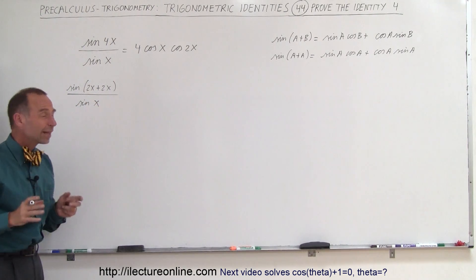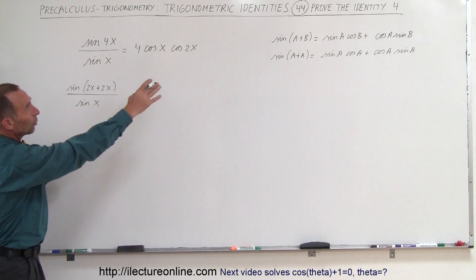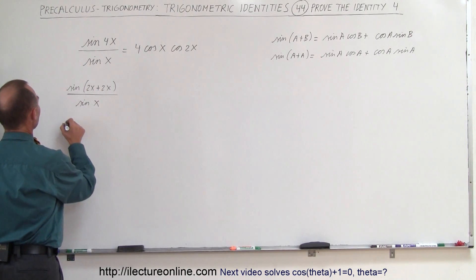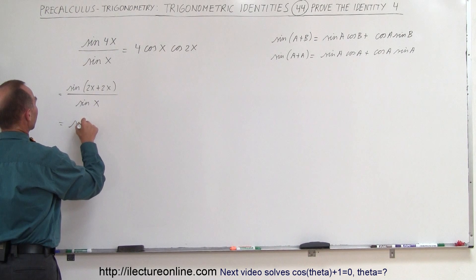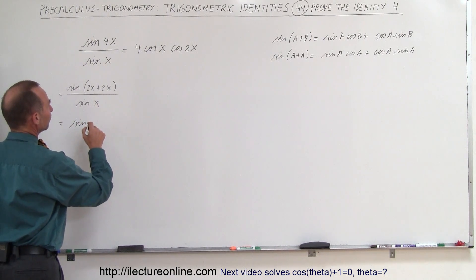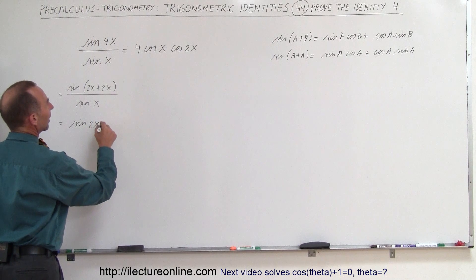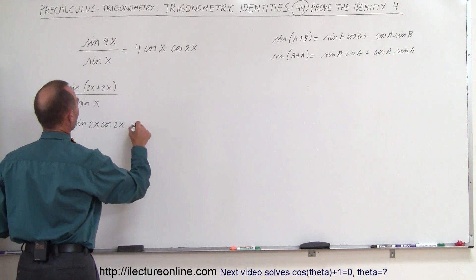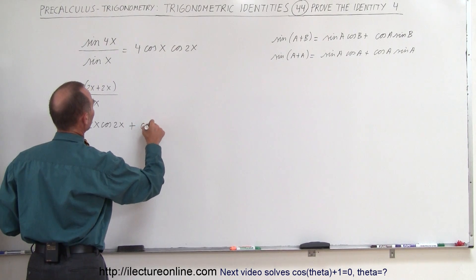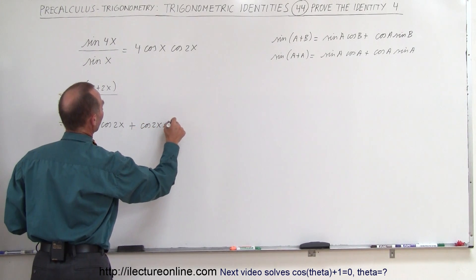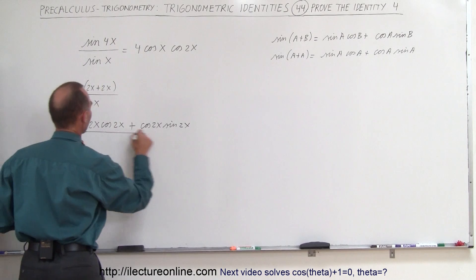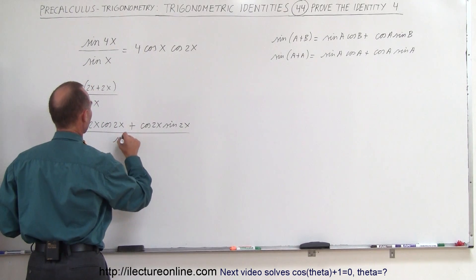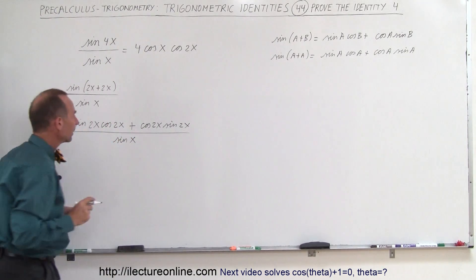Alright, if we do it like that, then we can expand it the way we did it over there. So we can write this as the sine of 2x times the cosine of 2x plus the cosine of 2x times the sine of 2x all divided by the sine of x.